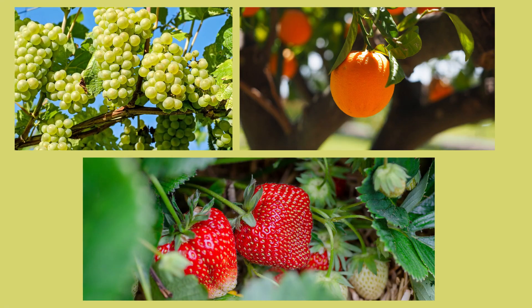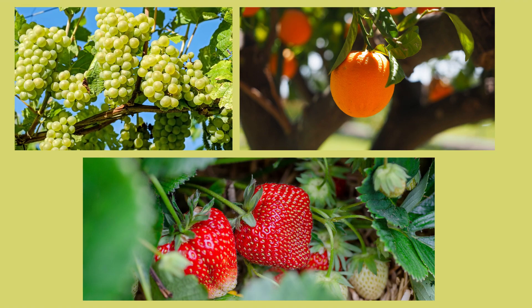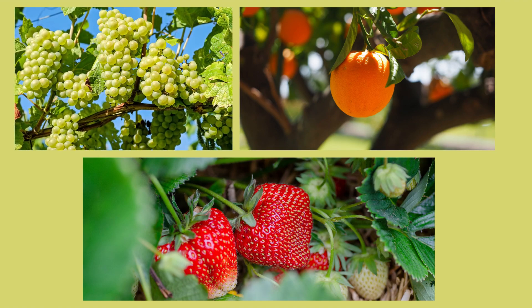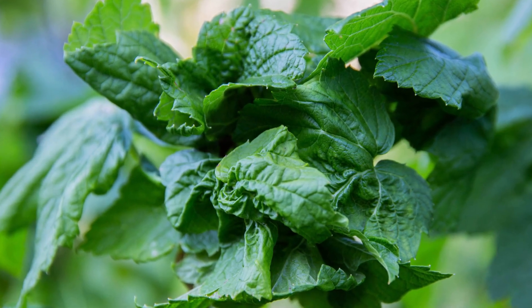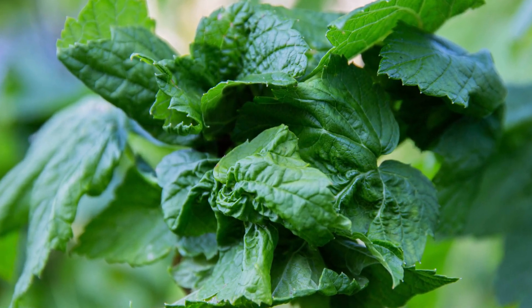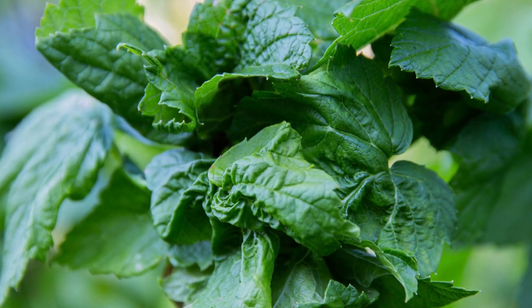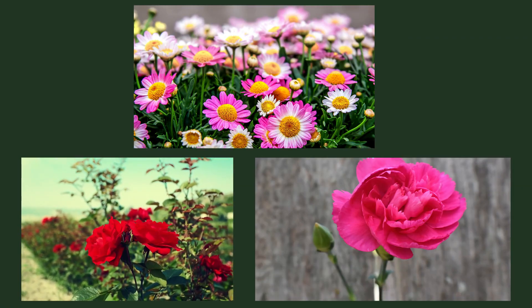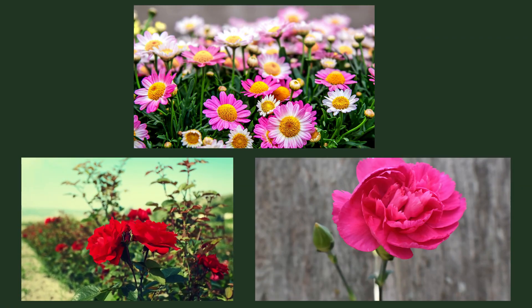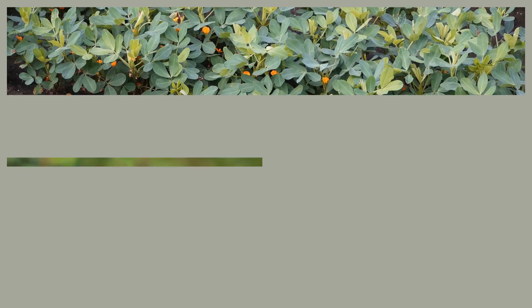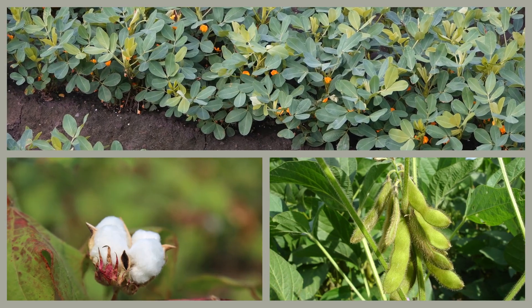Fruits: thrips can also infest fruit crops such as grapes, strawberries, and citrus. Ornamental plants: thrips feed on many ornamental plants including roses, chrysanthemums, and carnations. Field crops: thrips can also be a pest of cotton, soybeans, and peanuts.